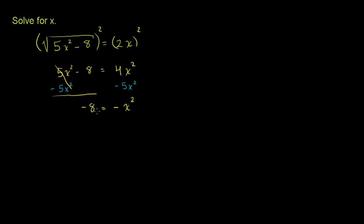And then we could multiply both sides of this equation by -1, that'll make it into positive 8, or we could divide by -1, however you want to view it. So we get positive 8 is equal to x².